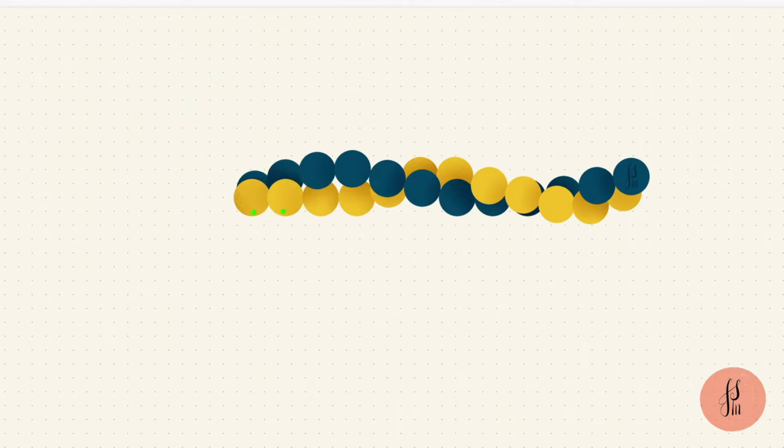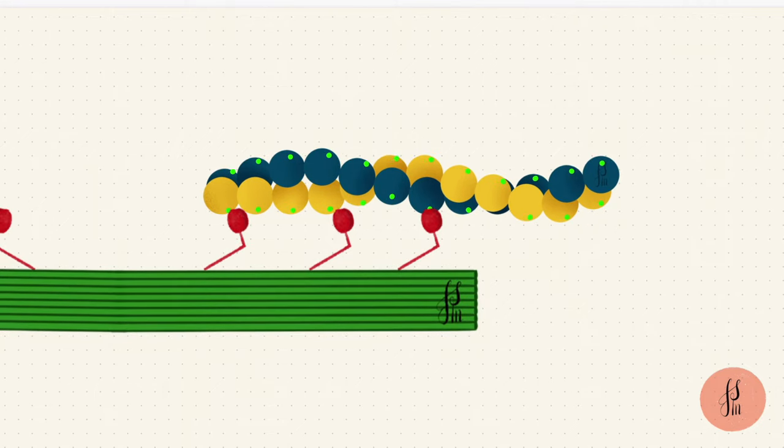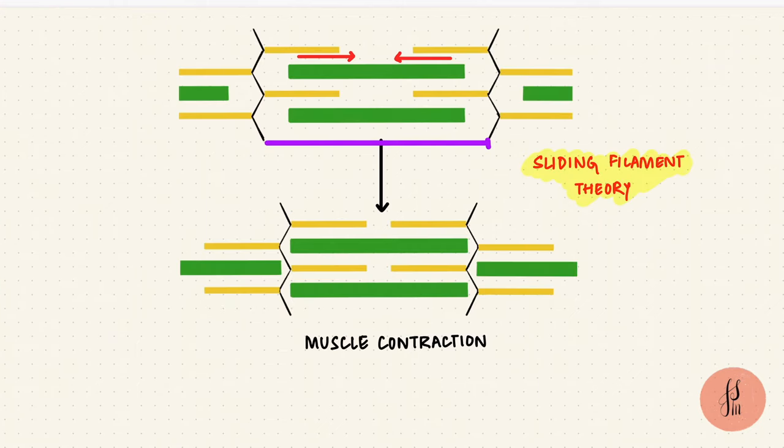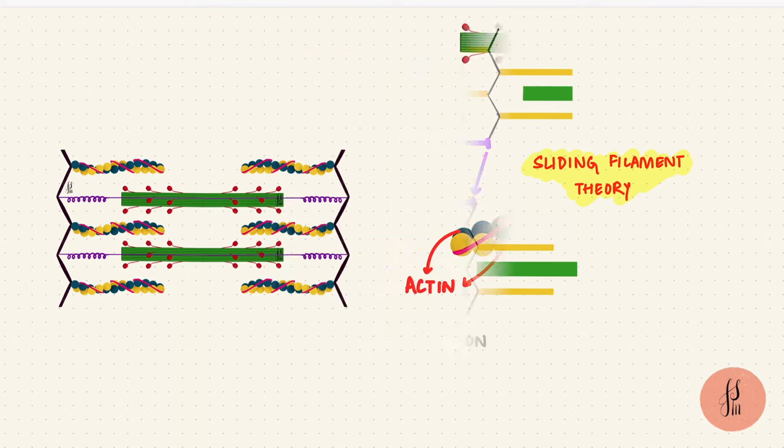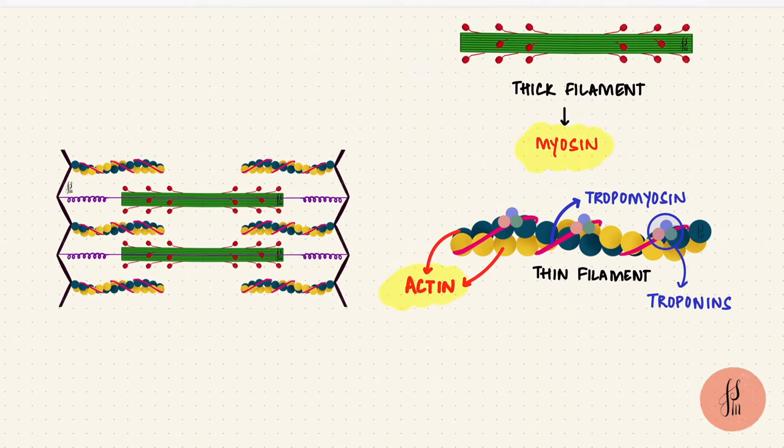They have sites that bind myosin so that when the two bind, the actin filaments slide over the myosin filaments shortening the sarcomere. If we look at it schematically, the sliding of the actin filaments like this shortens the sarcomere. Actin and myosin are thus the contractile proteins of the muscle.